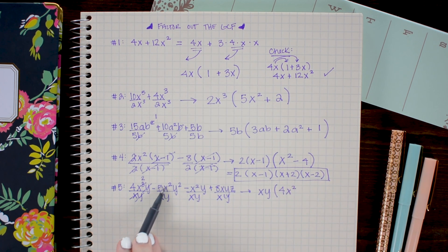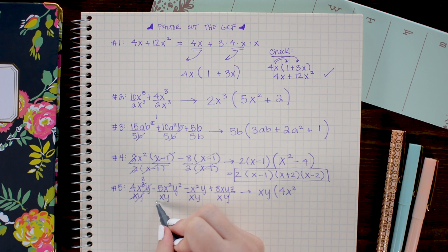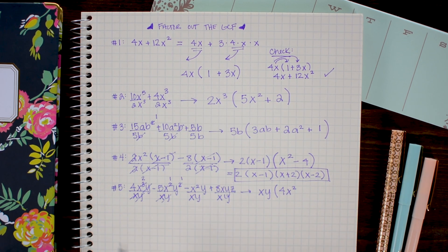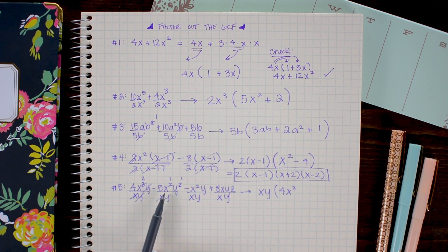In our next term we have again an x that can cancel out. And a y that can cancel out. So I'm left behind with negative 5xy.